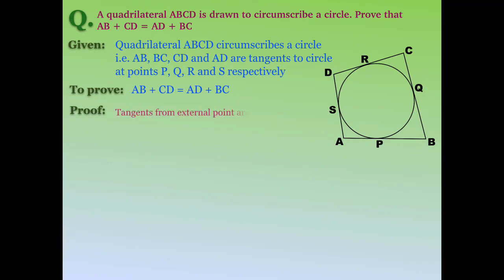Using the theorem that tangents from an external point are equal: AP = AS (tangents from A), BP = BQ (tangents from B), CR = CQ (tangents from C), and DR = DS (tangents from D). Adding all four equations, we get AP + BP + CR + DR on the left-hand side and AS + BQ + CQ + DS on the right-hand side.